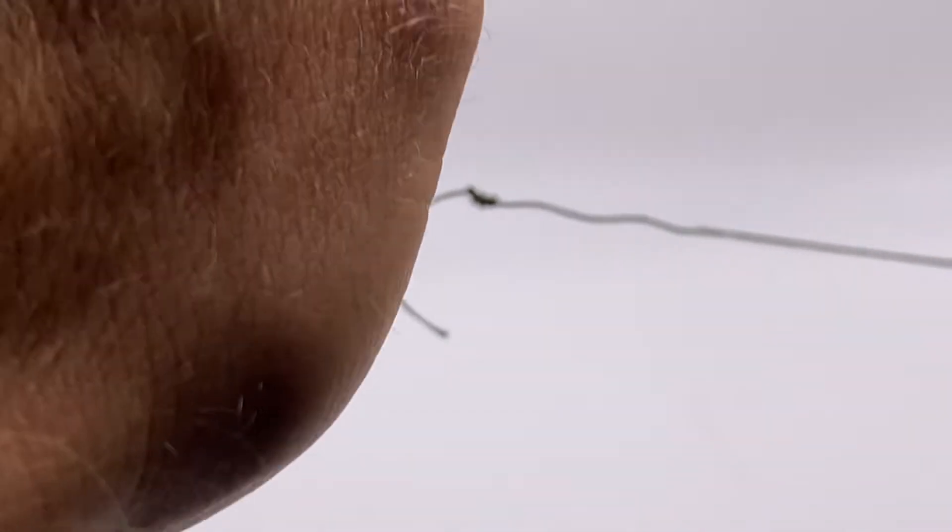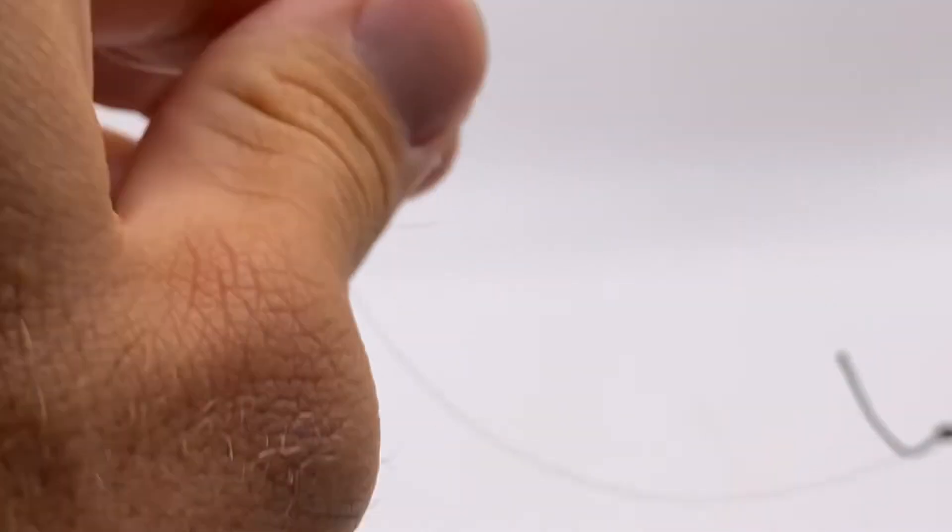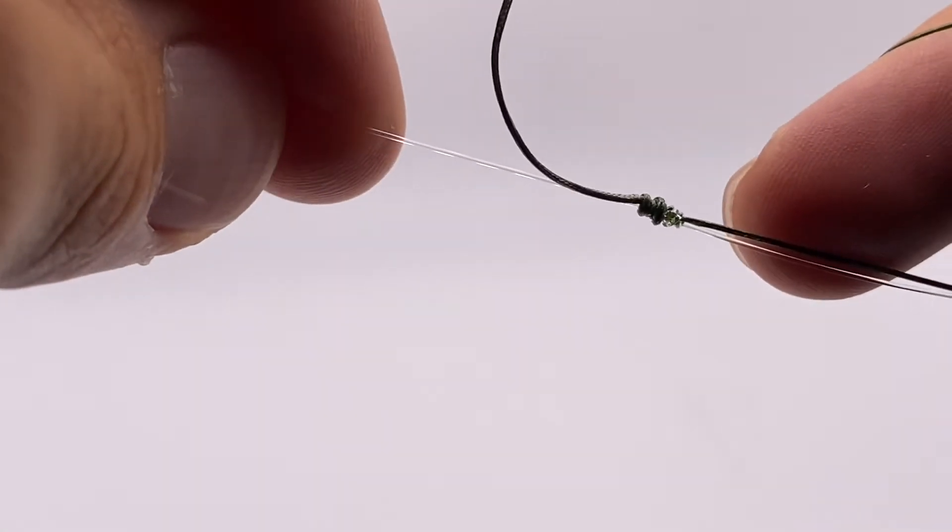Alright, so now that we've got both uni knots on each side, now you just cinch them together. The cool part is you literally just squeeze and then they meet each other. Just like that. That's exactly what you want to see.